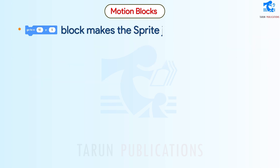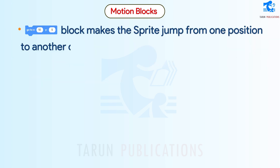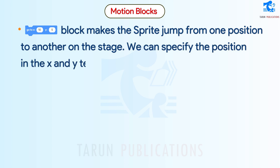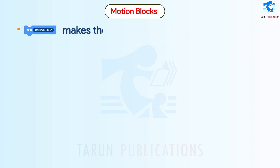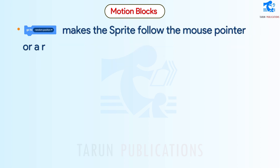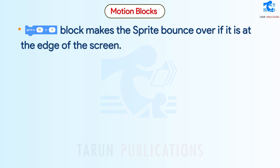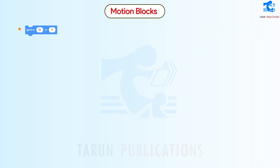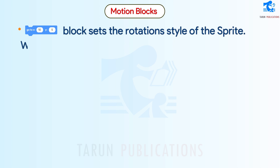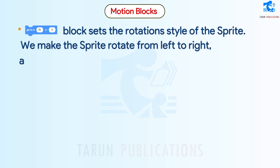One block makes the sprite jump from one position to another on the stage; we can specify the position in the X and Y text boxes. Another block makes the sprite follow the mouse pointer or a random position. A block makes the sprite bounce if it is at the edge of the screen. A block sets the rotation style of the sprite — we can make the sprite rotate left to right, all around, or no rotation at all.